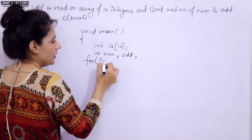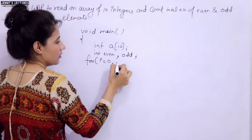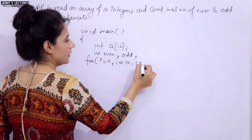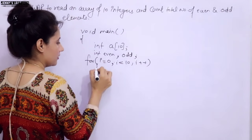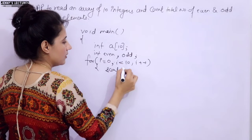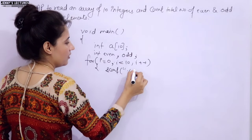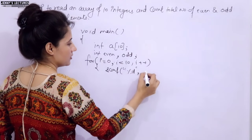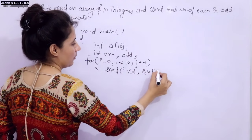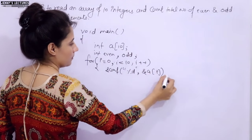We have initialized these variables with 0. Why? Because in C, if you don't initialize a variable, it takes a garbage value. Then when we add 1 to it, we'll get an incorrect garbage result. So we must initialize even and odd to 0 before using them. Then we read values from index 0 to 9 using a for loop and scanf.